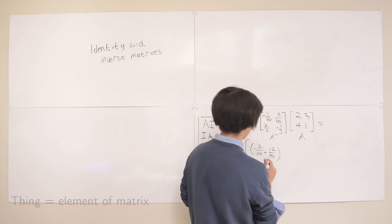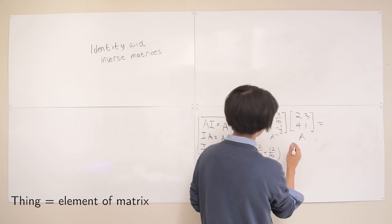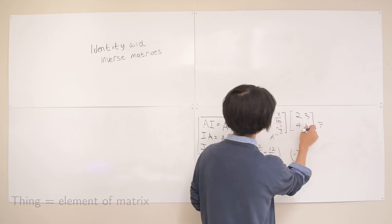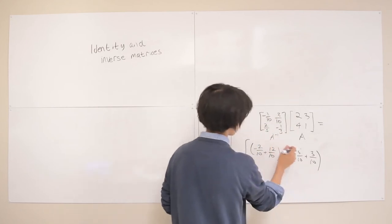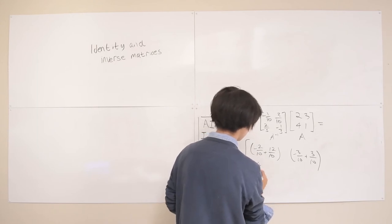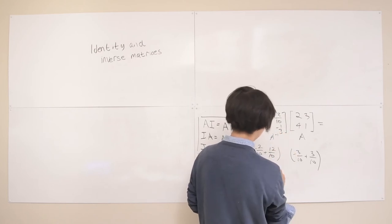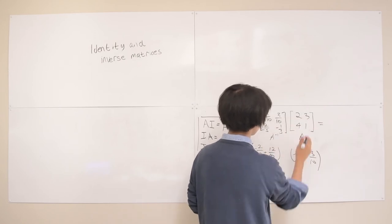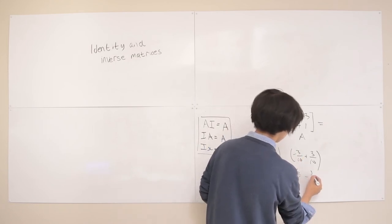And then we have, so this is going to be our first thing here. And then our second thing is going to be this with this. So that's going to be negative 3 over 10 with 3, plus 3 over 10. So then for this last element here, we're going to do this with this. So it's going to be 4 over 5, plus negative 4 over 5. And then here again with this and this, we have 2. So we have 6 over 5 minus 1 over 5.